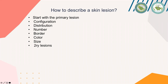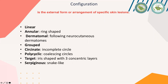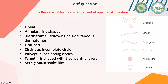Configuration is the external form or arrangement of specific lesions. It could be grouped, meaning clustered together. It could be arcuate, meaning an incomplete circle with breaks. It could be polycyclic, meaning two circles come together. It could be a target configuration, arranged in three concentric layers — outer dark, inner pale, and innermost the darkest. It could be serpiginous, meaning a snake-like configuration.